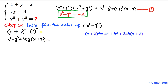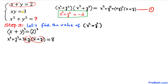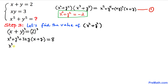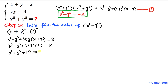We substitute x plus y equals 2 and xy equals 3 into the equation. So we get x power 3 plus y power 3 plus 3 times 3 times 2 equals 8, which means x cube plus y cube plus 18 equals 8.